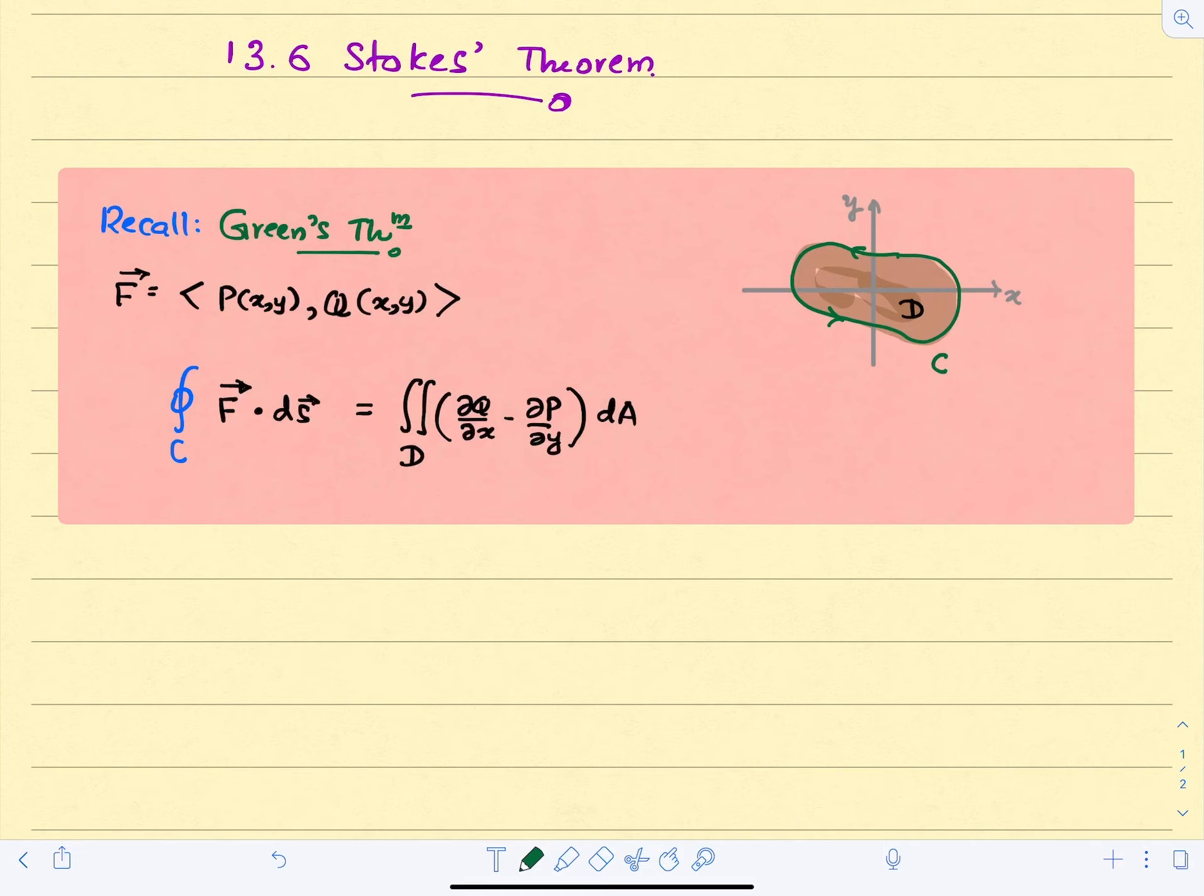Let's say we have a closed curve C on the x-y plane, and this domain D is the region bounded by this closed curve C. If we have a vector field in R2 with components P and Q,